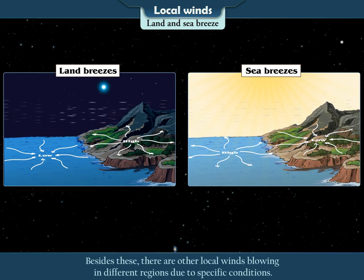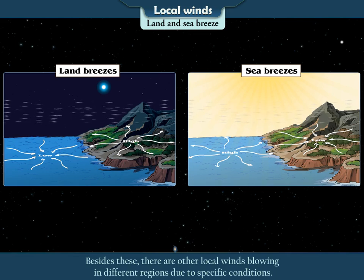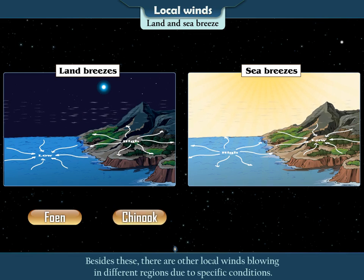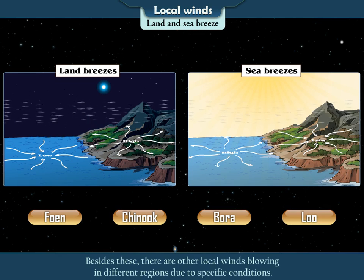Besides these, there are other local winds blowing in different regions due to specific conditions. Foen, Chinook, Bora, and Lu are some examples of such other local winds.